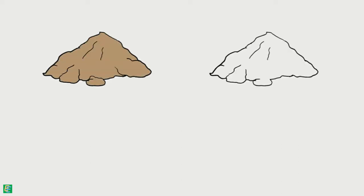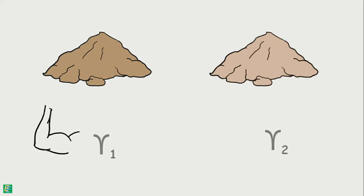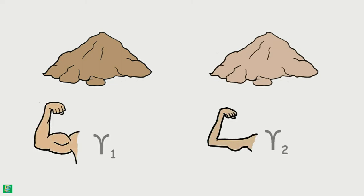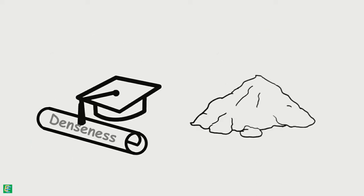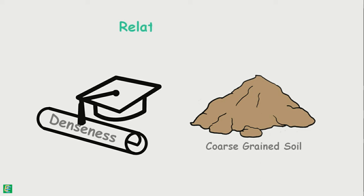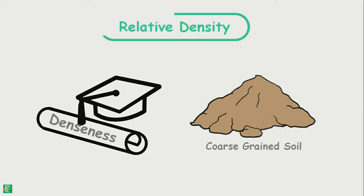But if two different soils have the same unit weights, they may produce different engineering properties. So, there is a parameter which defines the degree of denseness of the coarse-grained soil, which is called relative density.